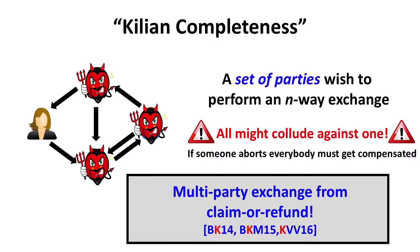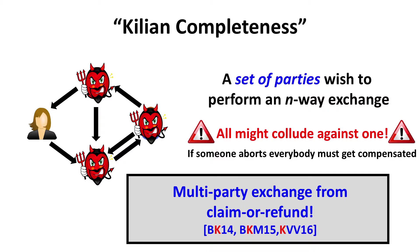For Kilian completeness, in the multi-party setting we want N parties to perform an N-way exchange. If someone aborts, all honest parties should be compensated. The question is whether two-party claim or refund transactions can give you this N-way exchange, and you can show this is actually possible. The four-party transaction graph illustrates this structure. The important thing to note is that the number of transactions is not quadratic — unlike OT where you need a quadratic number of OT channels, here you only need linear.